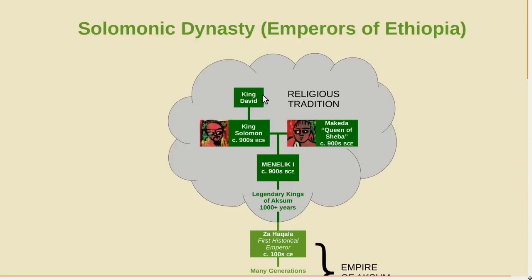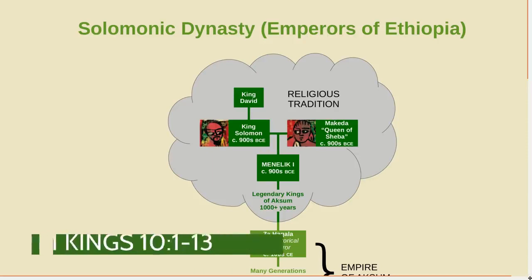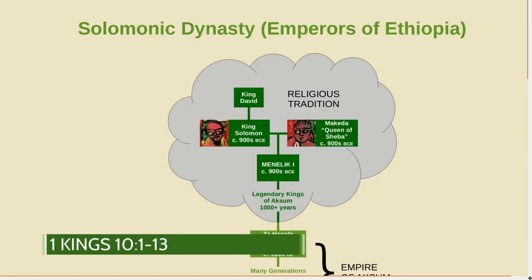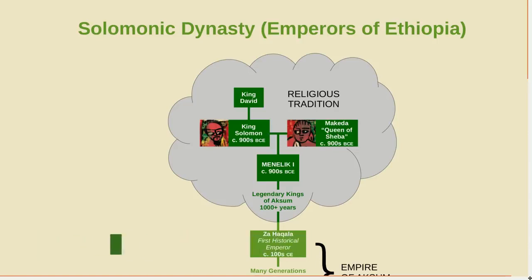According to Judeo-Christian tradition, he was the son of King David and was the one who built the first temple in Jerusalem. There's a story in the Bible in 1 Kings 10 that mentions a certain queen of Sheba who came to visit Solomon because she had heard of his great wisdom. According to that account, they talk for a long time, exchange some very expensive gifts, and then she returns home. But according to Ethiopian tradition, that's not all that happened.